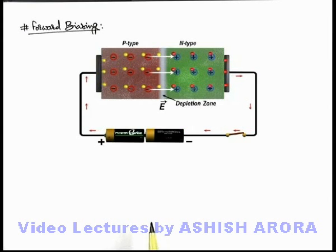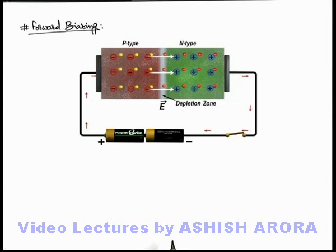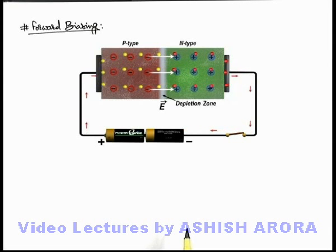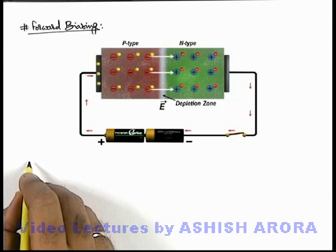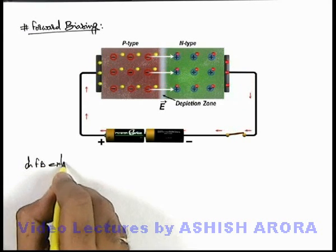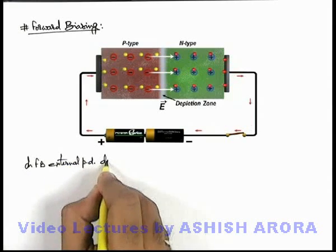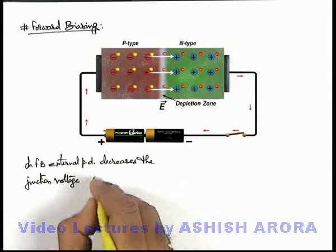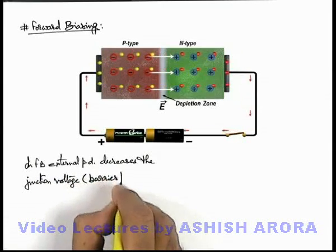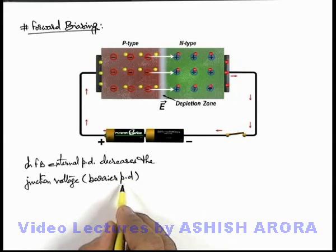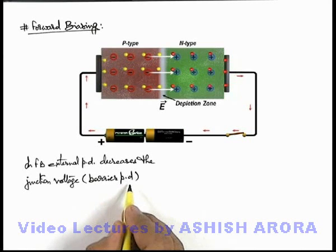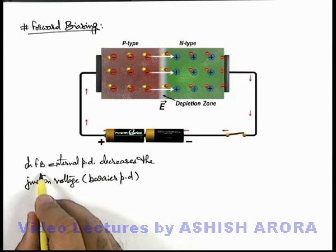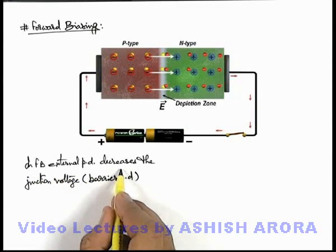The situation when the p side of the junction is at high potential and the n side is at low potential is called forward biasing. One important fact is that in forward biasing, the external potential difference decreases the junction voltage, which is also called the barrier potential difference, because the potential difference due to the internal electric field acts as a barrier for the flow of charge carriers through the depletion layer.